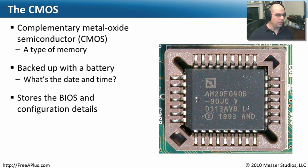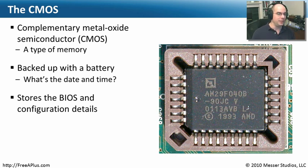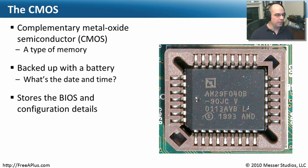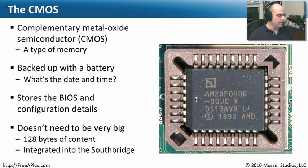If we lose the battery, we lose the configuration details — we lose the time, the date, and the configuration of our system. So if your computer is booting up and saying it doesn't remember anything, it's probably best to replace that battery. When we turn on our computer we're so accustomed to it always remembering the way we configured the hardware — that's because that battery is on our motherboard.